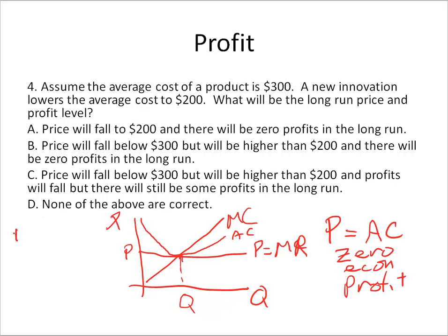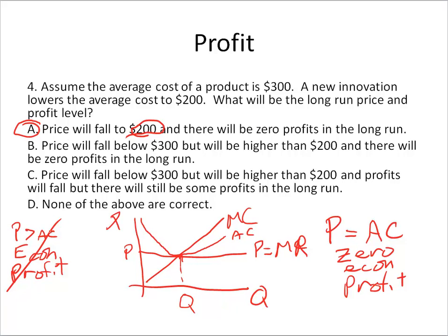If price is greater than average cost, there are economic profits and other firms will enter until profits are gone. If price is less than average cost, there are losses and firms exit. In this case, prices will fall to the new average cost of 200 dollars, and there will be zero economic profits in the long run. Answer A is correct.